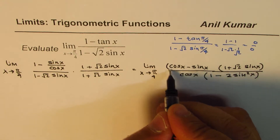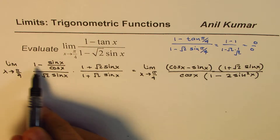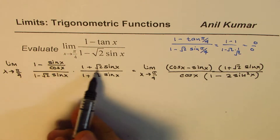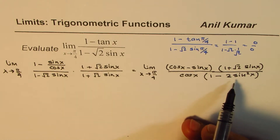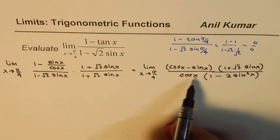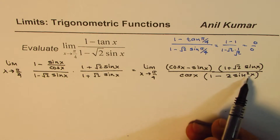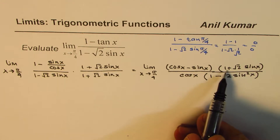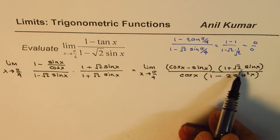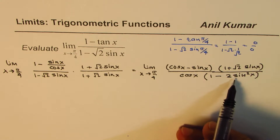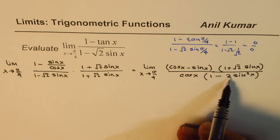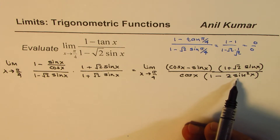So we have (cos x - sin x) being multiplied by that term, giving us cos x times (1 - 2 sin²x) in the denominator. Now, 1 minus 2 sin²x is equal to cos 2x — do you remember that identity?